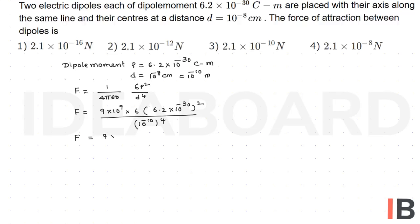This is equal to 9 × 10^9 × 6 into 30.44 × 10^-60 by 10^-40.